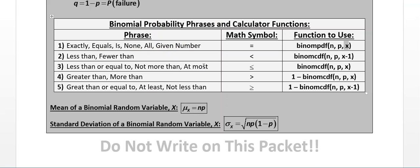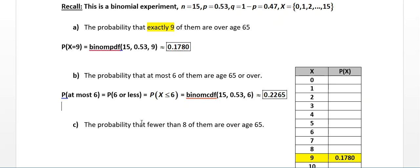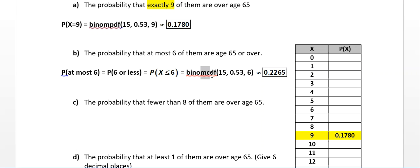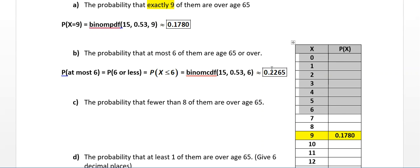Looking at the exam notes packet, 'at most' means less than or equal to 6, so I want binomCDF with 15, 0.53, 6. BinomCDF adds up probabilities from 0 up to and including the value you specify — so it adds the probability of 0, 1, 2, 3, 4, 5, and 6. All seven of those probabilities add up to 0.2265.